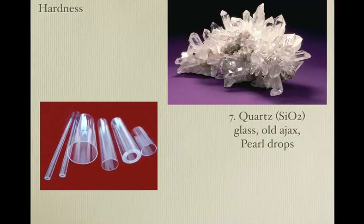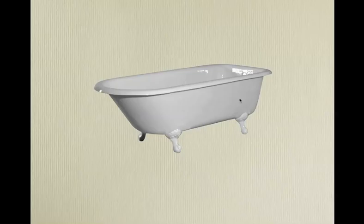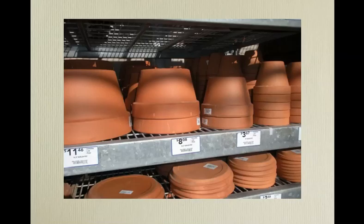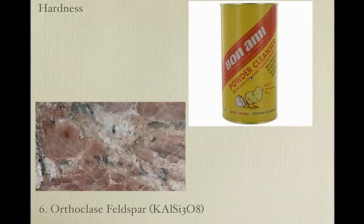Number seven: quartz — the hardest common mineral. Silicon dioxide. We make it into glass. The old Ajax and the old Comet were made of ground-up quartz. Why would quartz clean feldspar? Hardness is seven; go back to feldspar — hardness of six. When we scrubbed the old bathtub at Grandma's house, you might have noticed around the drain the feldspar was actually worn away — hardness seven was scrubbing hardness six. It wasn't just taking the grime; it was taking the feldspar away.